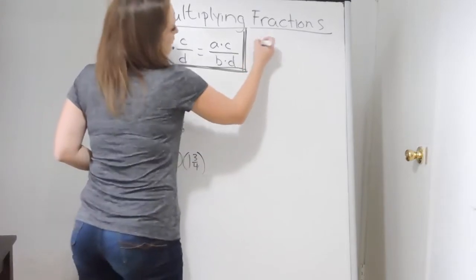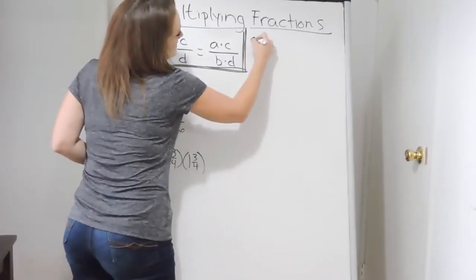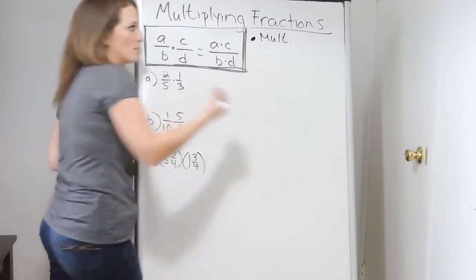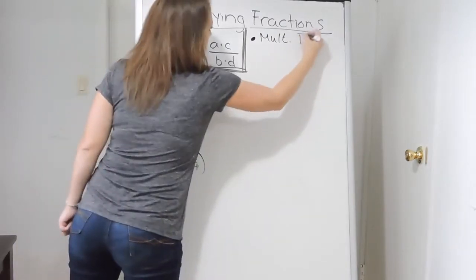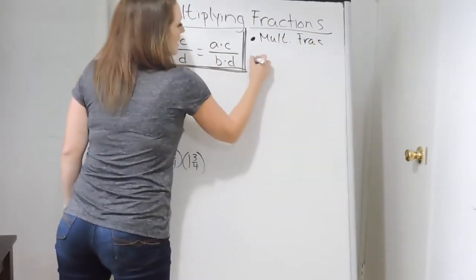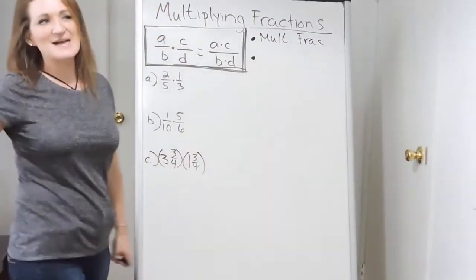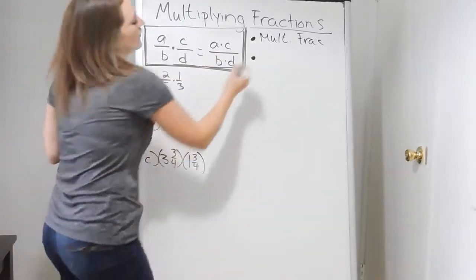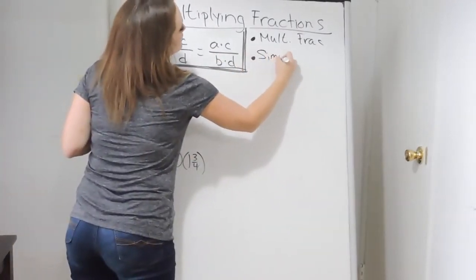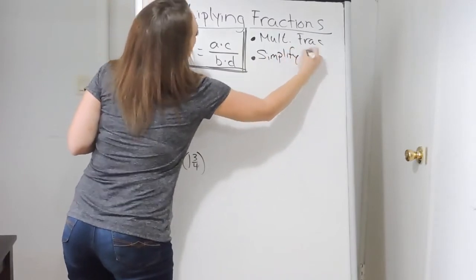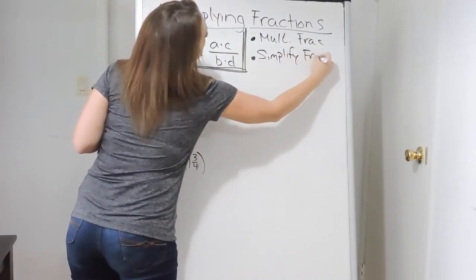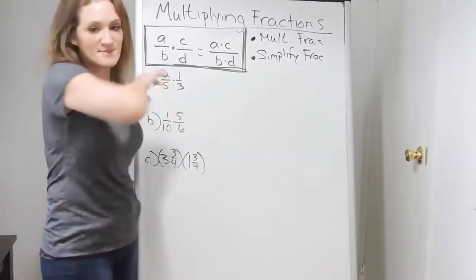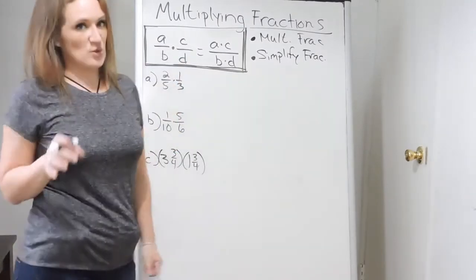When it comes to multiplying fractions, your first step is to actually multiply the fractions. Your second, or last step, regardless of what you're doing with fractions, is to simplify the fraction. You always need to make sure that you simplify fractions in the end — it doesn't matter what you're doing with them.